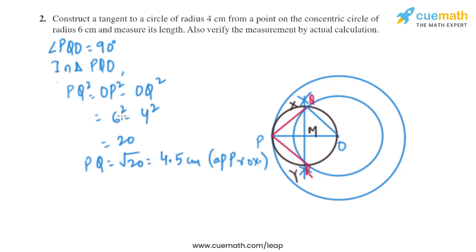we'll get PQ squared equals OP squared minus OQ squared. From here we'll get the value of PQ that is square root of 20, which is same as 4.5 centimeters approximately.